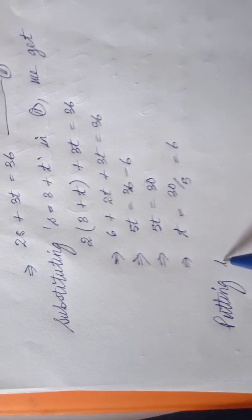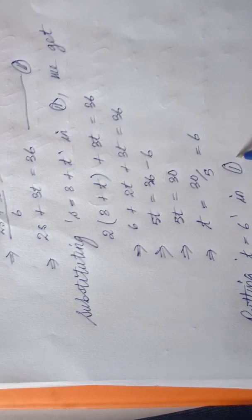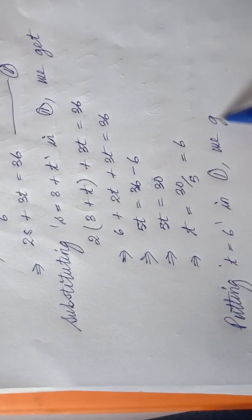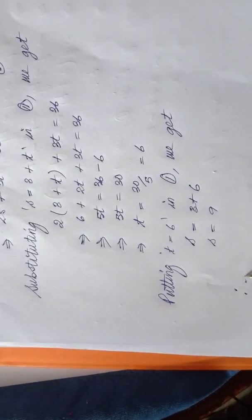Substituting d equal to six in equation one: equation one is s equal to three plus d, and d is six, so s equal to three plus six, which is nine. Therefore s is equal to nine. It's very simple.